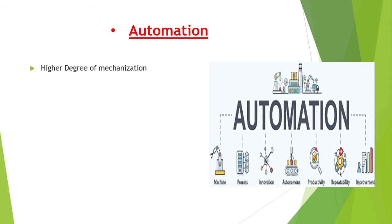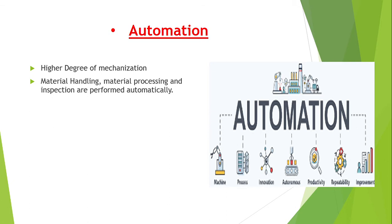In mechanization there is no provision for feedback, hence it is called an open loop system. But in automation we study the higher degree of mechanization — it represents the process in which all operations like material handling, material processing, and inspection are performed automatically. This means the operator is required only for supervision and can operate a number of machines at one time.